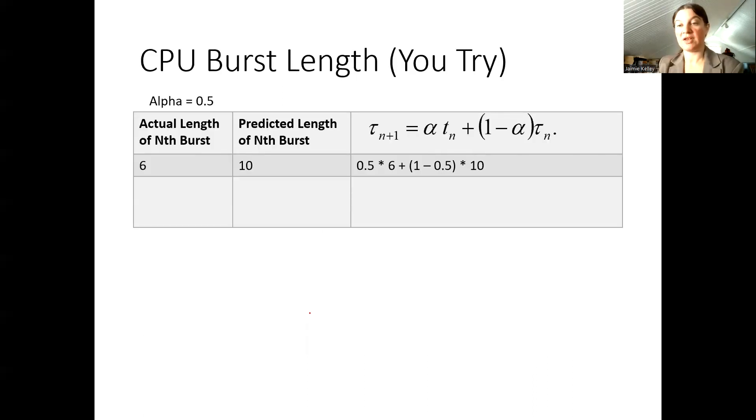Let's give this a try. I find that the easiest way to work with our CPU bursts is to have an alpha of 0.5. This shouldn't change within a specific set of calculations, but alpha can be different based on which version of this algorithm you're using or which system you're on. So just as an example, if our actual length of the nth burst was 6 and we predicted it to be 10, then we would multiply 0.5 times 6 and then add 1 minus 0.5 multiplied by 10. So that will give us a total of 8 for our next predicted CPU burst.